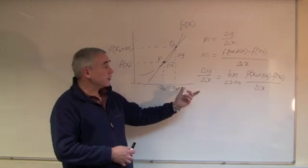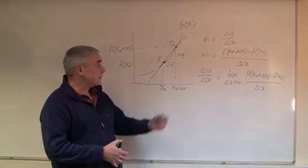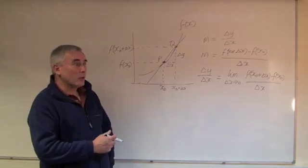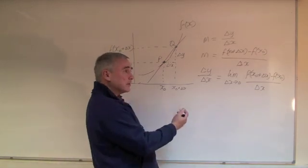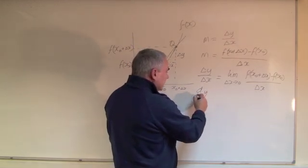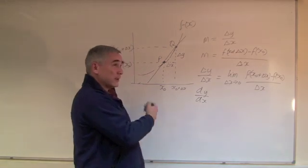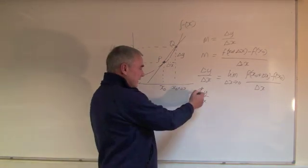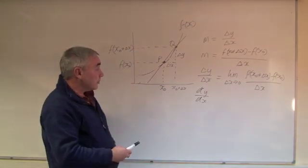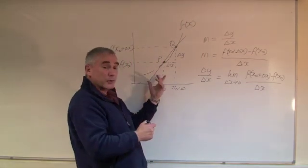Now that we have a definition for the gradient at any particular point, delta Y over delta X is defined as the derivative of the function F of X at a particular point P. We give this a special symbol. It's quite often given the symbol dY by dX. That is a symbol in its own right. It is never to be interpreted as the Ds can cancel to end up with Y over X. It is a symbol in its own right—dY over dX as a definition for the derivative at a particular point of a function.